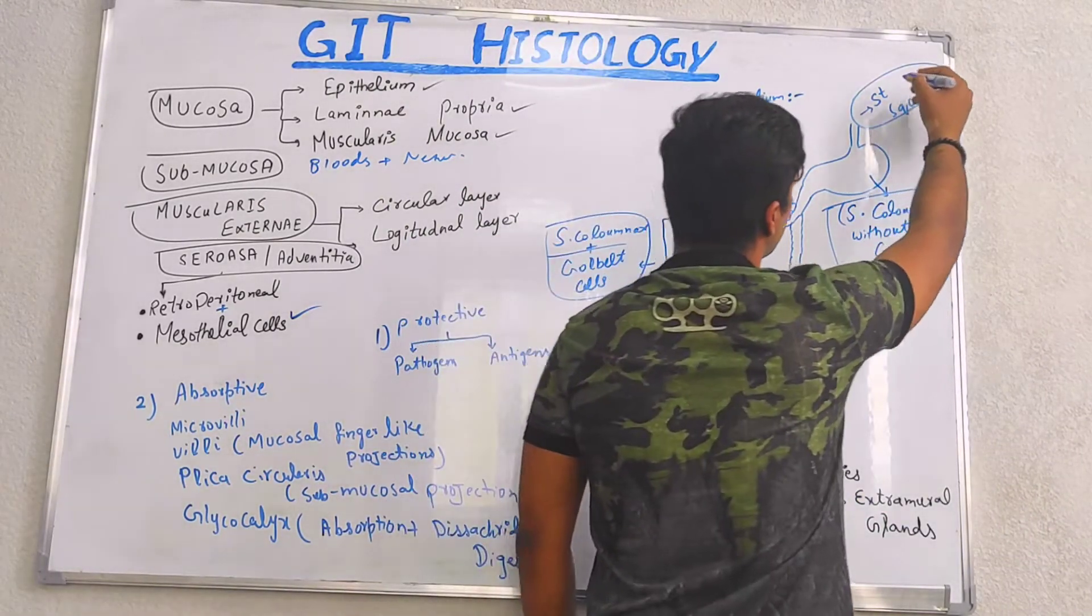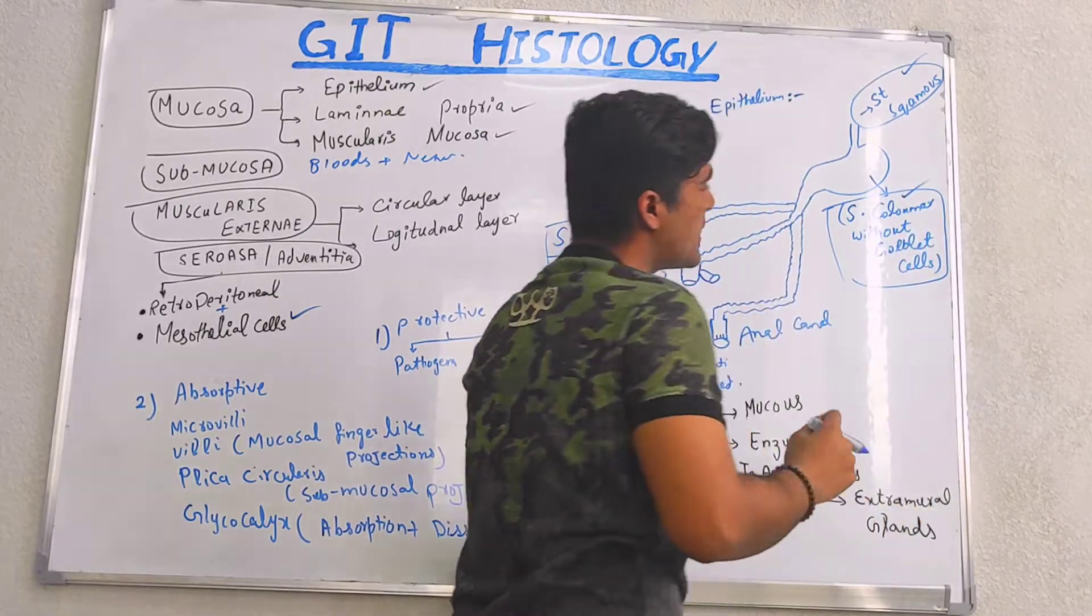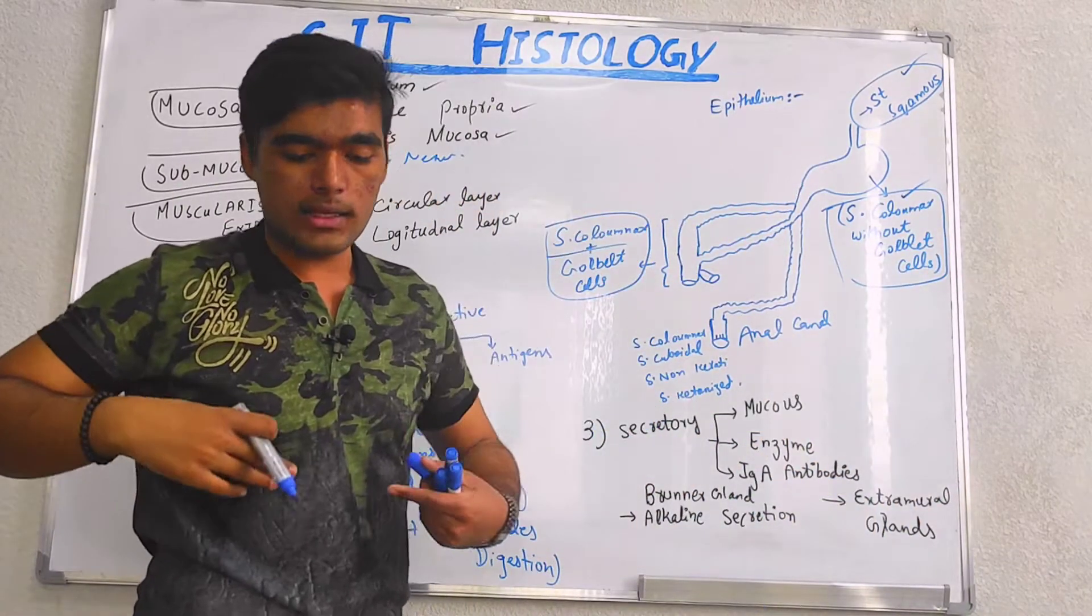Epithelium is stratified squamous in esophagus, stratified columnar without goblet cells in stomach.